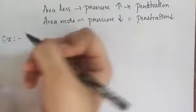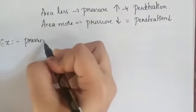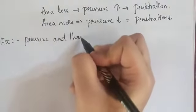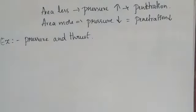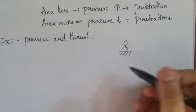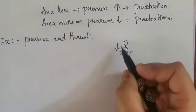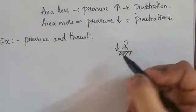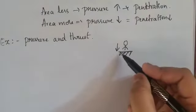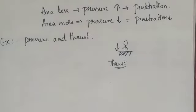Consider an example to understand both pressure and thrust. Suppose you are standing on sand or mud. The force you apply is in the downward direction — perpendicular to the surface of the ground. This force, acting downward due to the weight of your body perpendicular to the surface, is called thrust.